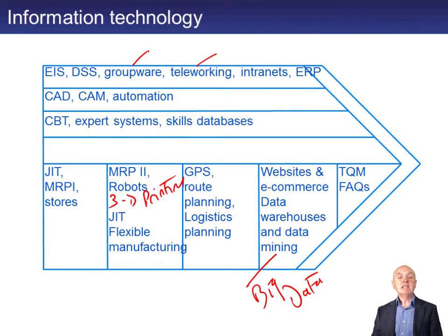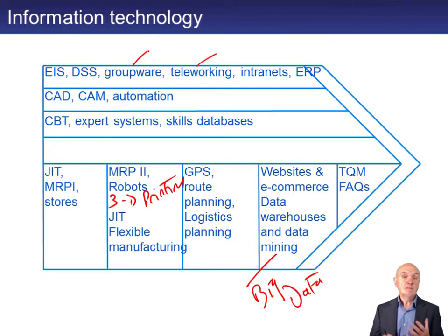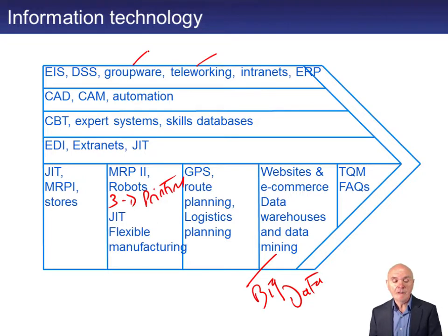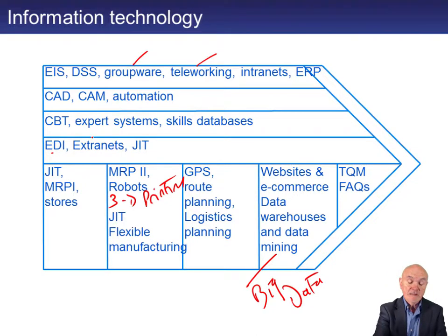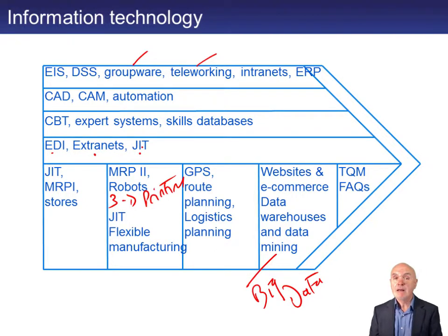For firm infrastructure, we can use executive information systems and decision support systems, and allow people to work remotely. Groupware allows people to collaborate on documents rather than working separately. In technology development, computer-aided design and computer-aided manufacturing greatly speed up production of new goods — shrinking the design-to-launch cycle from six months to perhaps three months. For human resources, computer-based training means people can have on-demand training at their desks. We can maintain skills databases to find, for example, who is an engineer who speaks German to send to Frankfurt. In procurement, electronic data interchange sends orders electronically to suppliers, and suppliers can monitor our inventory levels — essential for just-in-time manufacturing systems.